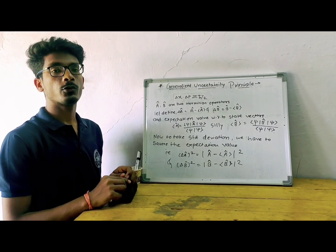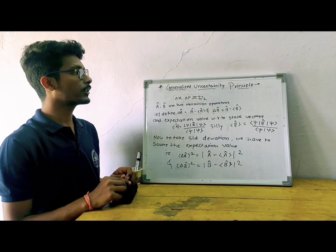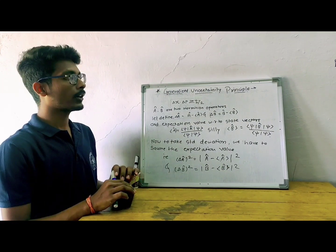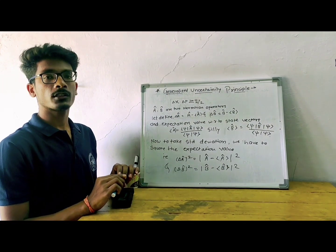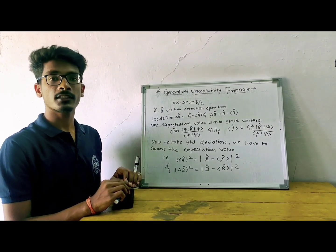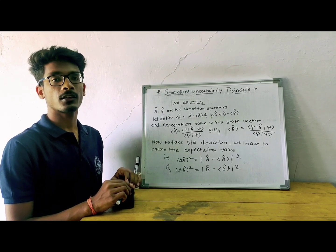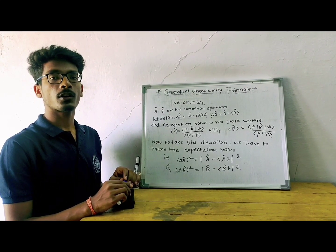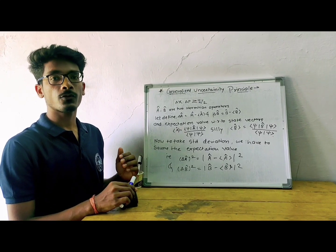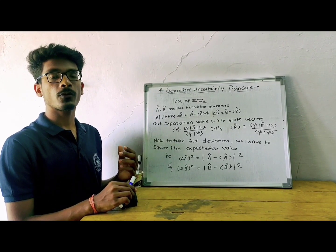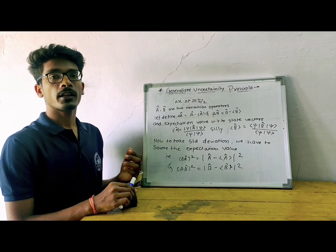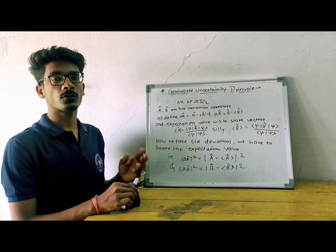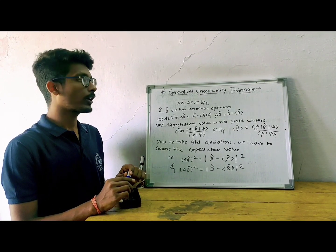Hello everyone. Today we are going to discuss a new topic, that is the generalized uncertainty principle. Before that, we are going to discuss what the Heisenberg uncertainty principle states. It states that for any body, both position and momentum cannot be measured more accurately at the same instant of time.